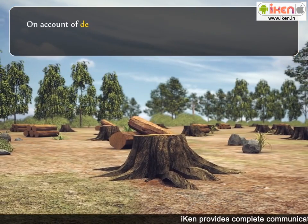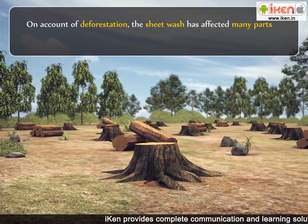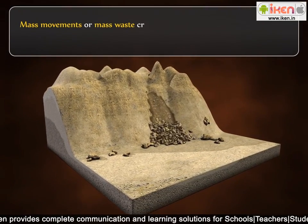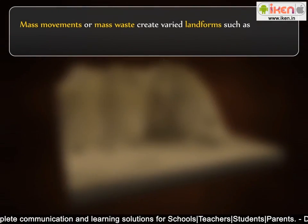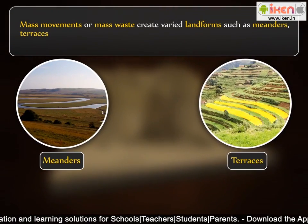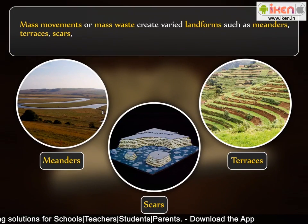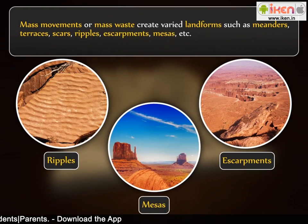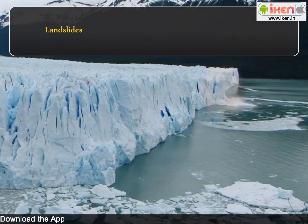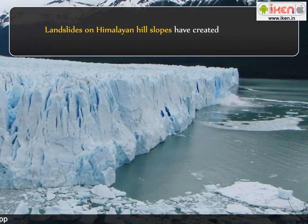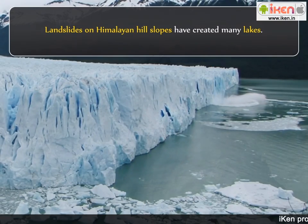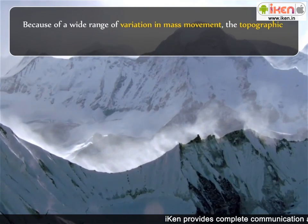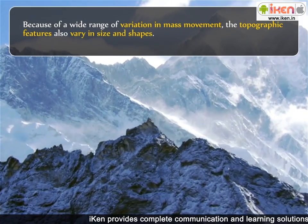On account of deforestation, sheet wash has affected many parts of the world. Mass movements or mass wasting create varied landforms such as meanders, terraces, scars, ripples, escarpments, mesas, etc. Landslides on Himalayan hill slopes have created many lakes. Because of a wide range of variation in mass movement, the topographic features also vary in size and shape.